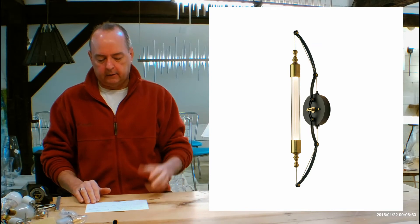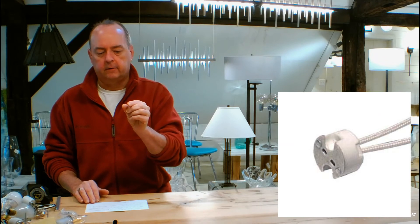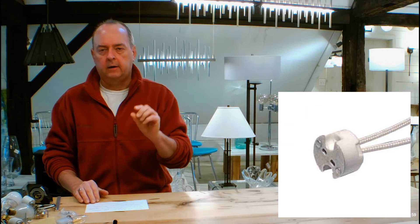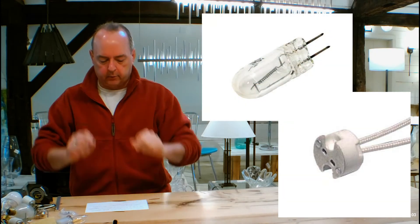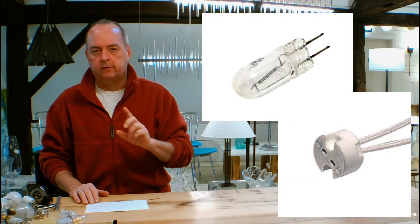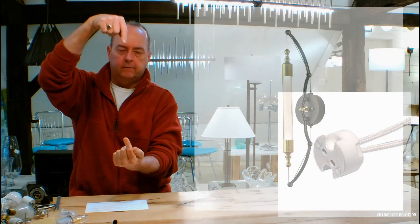It's going to be using two GY 6.35 sockets. Those are very little tiny sockets that accept a very small low voltage halogen, the ones with little prongs. There's going to be two of them at 20 watts each, and they're going to be at the ends of that tube.